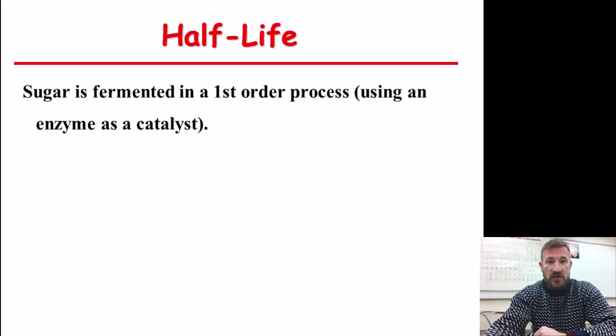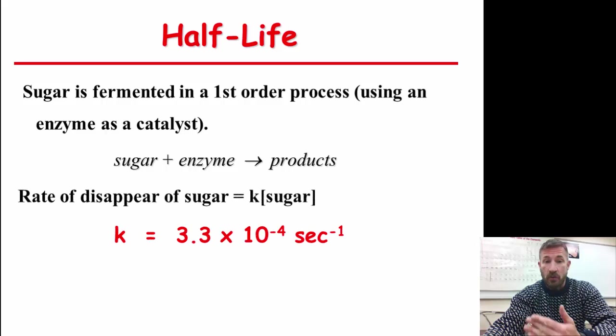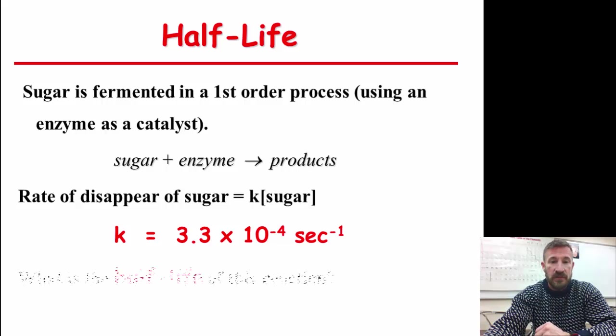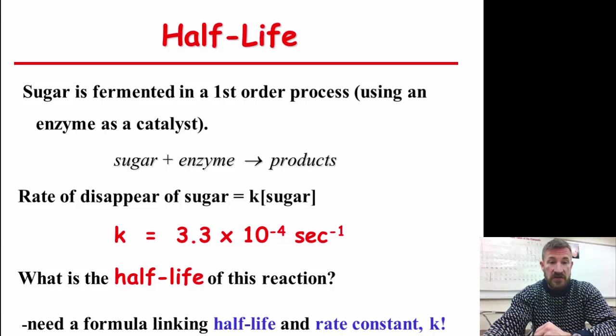Look at this problem. We have sugar. It's fermented in a first-order process using a catalyst, and it produces a product. And so we have this reaction here where the rate equals K times the concentration of sugar. And this is a rate constant. What is a half-life for this reaction? We actually usually have this formula for this. So we need a formula linking half-life and the rate constant.